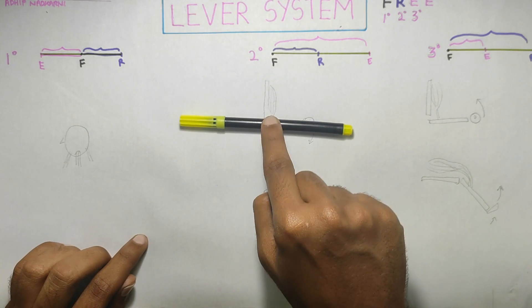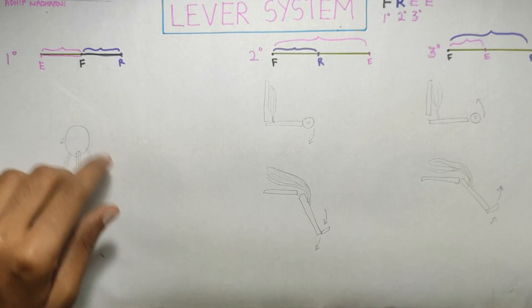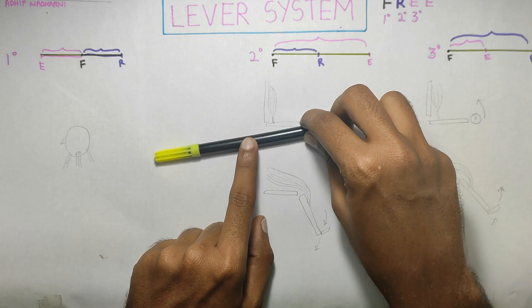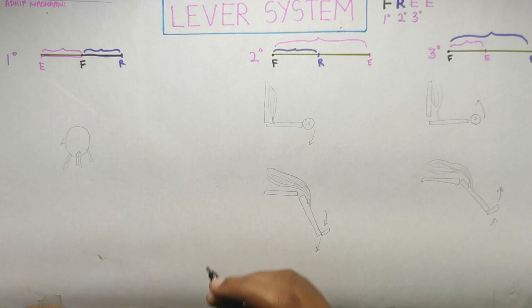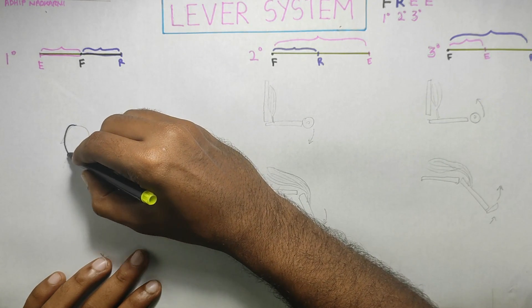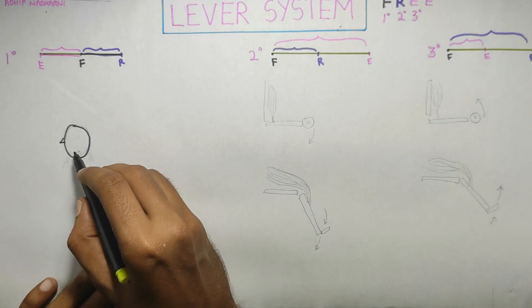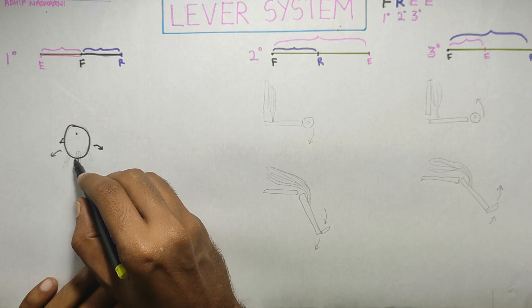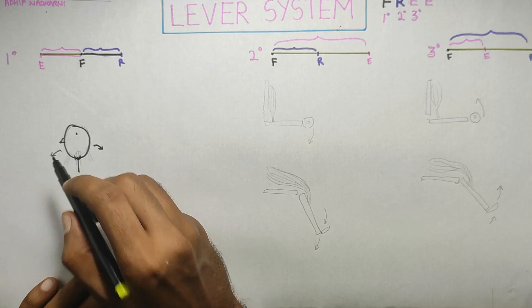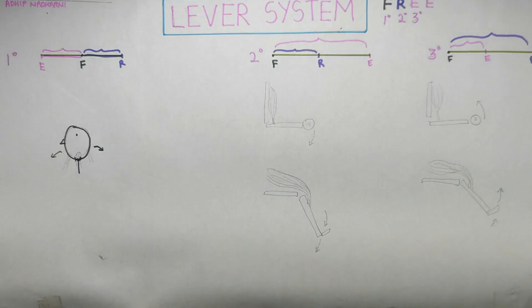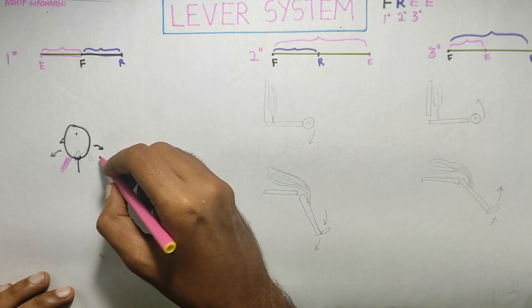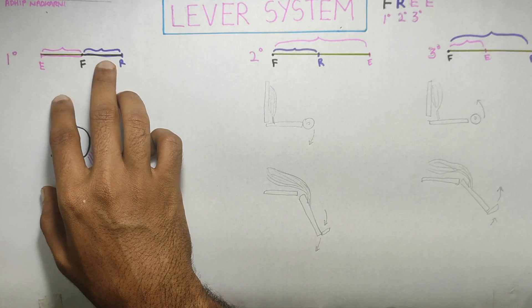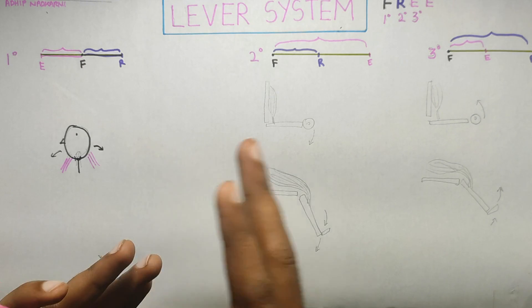We have three lever systems. A lever moves around a fulcrum — that is a fixed point, your F. If it acts like a seesaw, the fulcrum is in the middle and the other two ends are moving — that is your first degree lever system. An example is your head going into flexion and extension on the occiput, with flexors on one side and extensors on the posterior side.